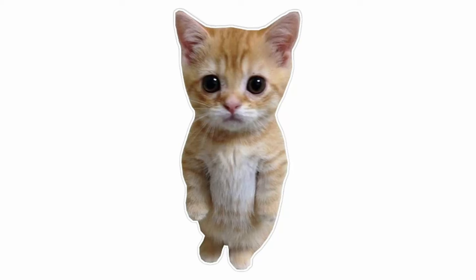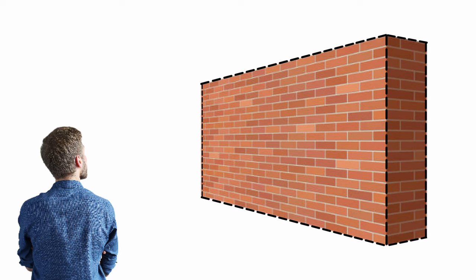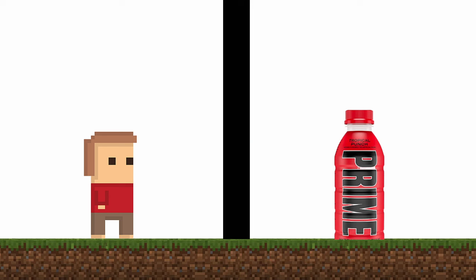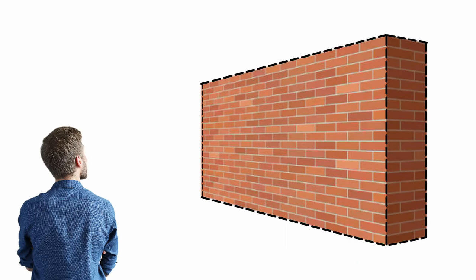A four-dimensional being viewing our three-dimensional world will most likely have the ability to see through any wall. To help you understand, let's take a look at this two-dimensional image. The two-dimensional being can't see the object because of the wall in between. But we can because we're viewing the image from a three-dimensional perspective. Other than that, we are also able to determine the depth of the wall. So hypothetically, a four-dimensional being will have the ability to see beyond walls, whilst also being able to determine its depth.